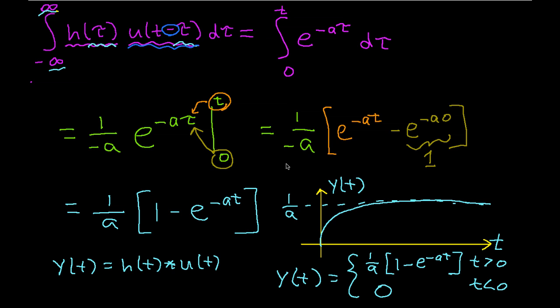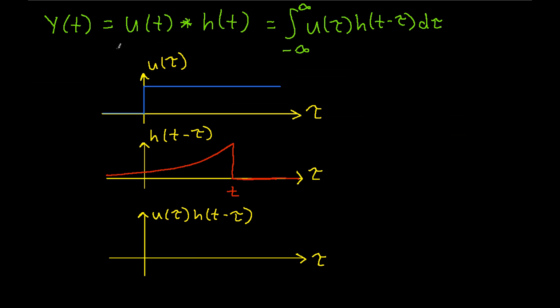The last thing I'd like to do before ending the video is show that the convolution does not depend on the order in which we have the signals. I've written y of t as u of t convolved with h of t, so the order of the two signals is now interchanged. If I work out the integral, I have the integral of u of tau times h of t minus tau d tau.